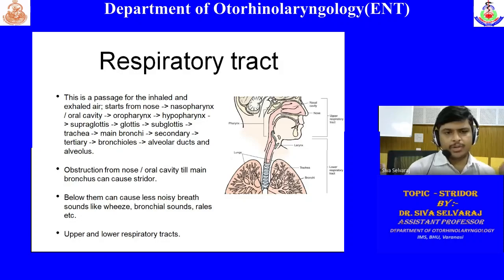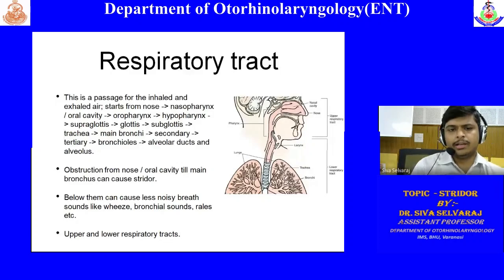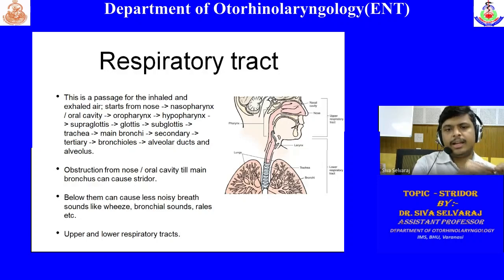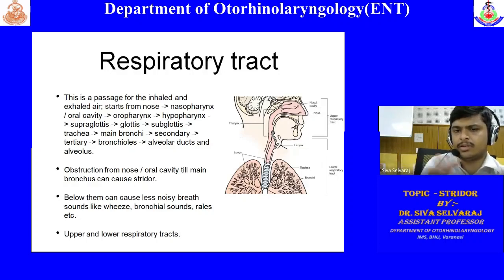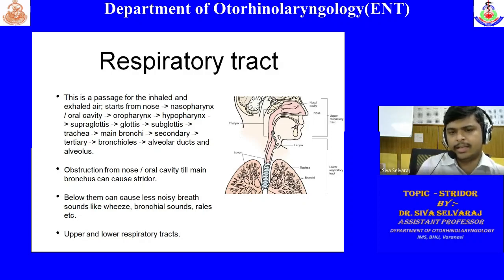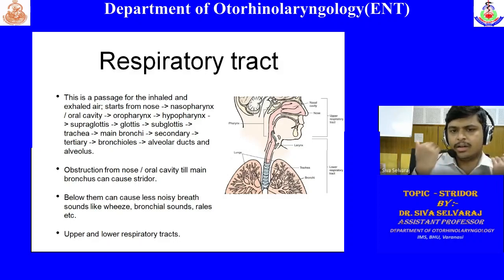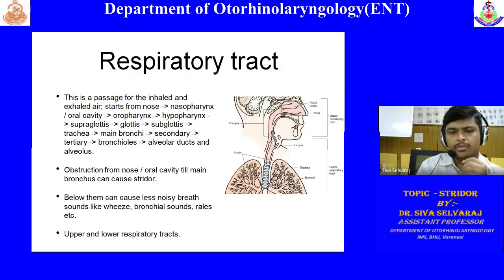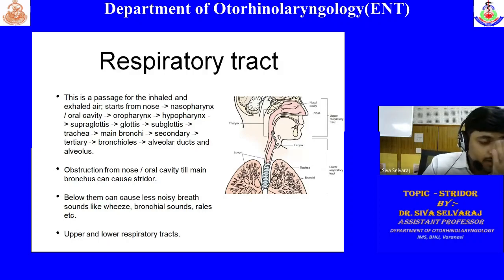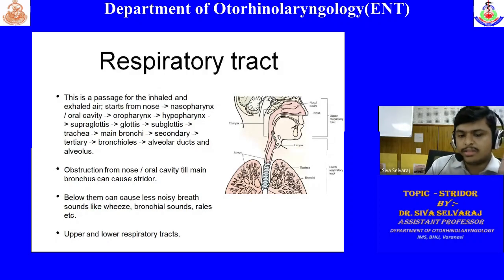When passing a suction tube or feeding tube, there will be a lead lining on the wall — lead is a radio-opaque material. If you take an X-ray, you can see the tube coiled within the nasal cavity because it is not able to pass through the choana into the nasopharynx and oropharynx. Obstruction from nose or oral cavity up to the main bronchus can cause stridor.